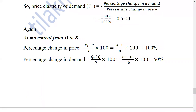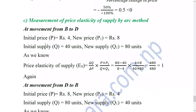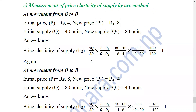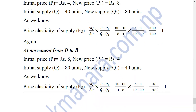For price elasticity of supply by arc method from B to D: initial price is 4, new price is 8. Initial quantity supplied is 40 units, new quantity supplied is 80 units. The formula is delta Q by delta P into (P plus P1) by (Q plus Q1). So: (80 minus 40) divided by (8 minus 4), into (4 plus 8) by (40 plus 80), which equals 1.